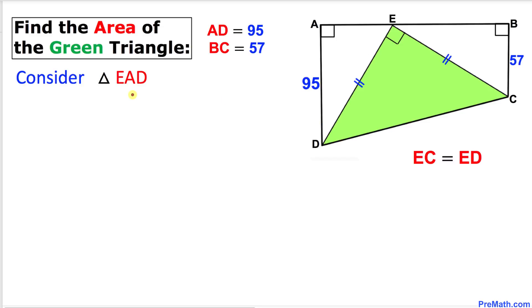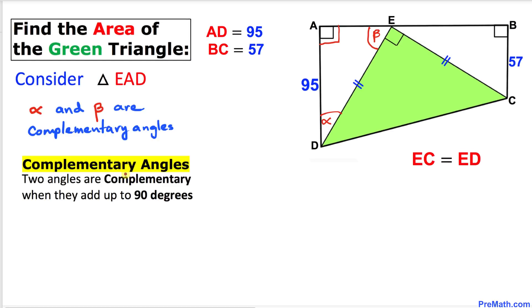Now let's focus on this triangle EAD. Let me go ahead and call this angle alpha and this angle beta. We know that the sum of all three angles is 180 degrees, and since this angle A is 90 degrees, alpha and beta are going to be complementary angles. Two angles are complementary if they add up to 90 degrees.